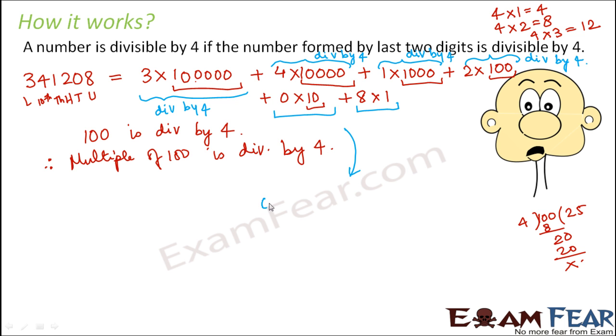So basically, what are we left with? We are left with 0×10 plus 8×1. That means the digit at the unit's place and the digit at the 10's place. So we are basically left with these two digits.